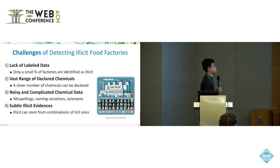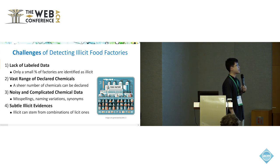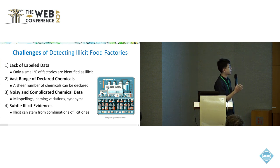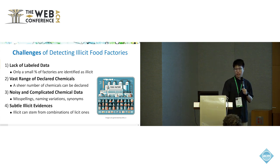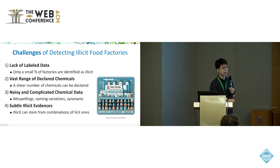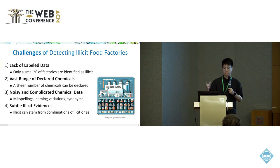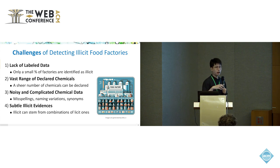This brings us to the research goal of this paper: we want to make an unsupervised detection model. Given each food factory and its associated set of declared chemicals, we want to detect illicit factories in an unsupervised way. So we are not using the labels of each food factory; instead we train only on normal factories and look for anomalous behaviors that distinguish illicit from licit factories.